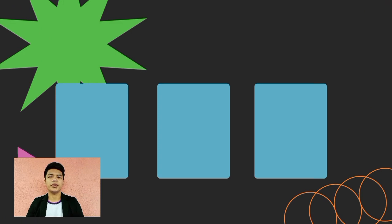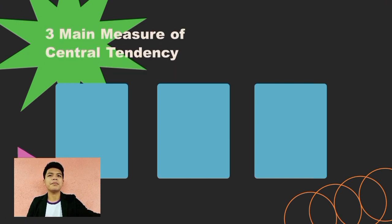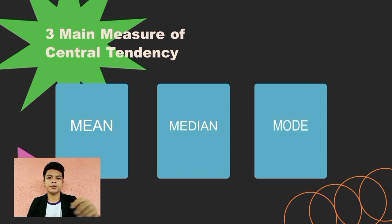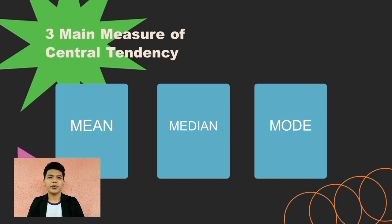Now that you have known the learning objectives of this discussion, let's proceed to the proper discussion. Our topic for today is all about the three main measures of central tendency: the mean, the median, and the mode. Who among you here are familiar with these terms? Do you have an idea about this concept? In this lesson, we will be discovering all about these three measures of central tendency.